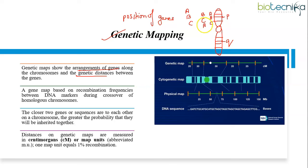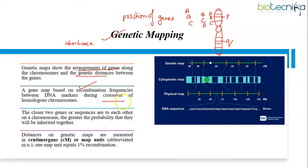Genetic mapping is crucial for understanding the inheritance patterns of traits, identifying genes associated with diseases, and studying the structure and function of genomes. A genetic map is based on recombination frequency — the frequency with which chromosomal crossing over occurs between two genes during meiosis. Crossing over takes place in prophase I of meiosis, where the exchange of genetic material between non-sister chromatids results in new combinations.